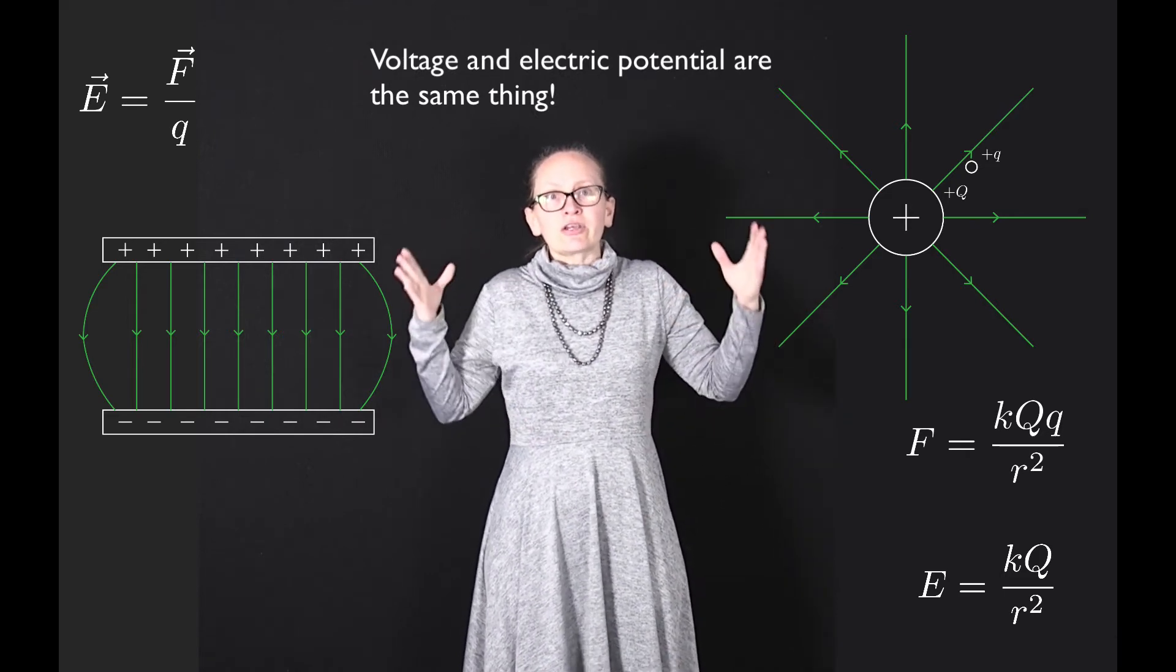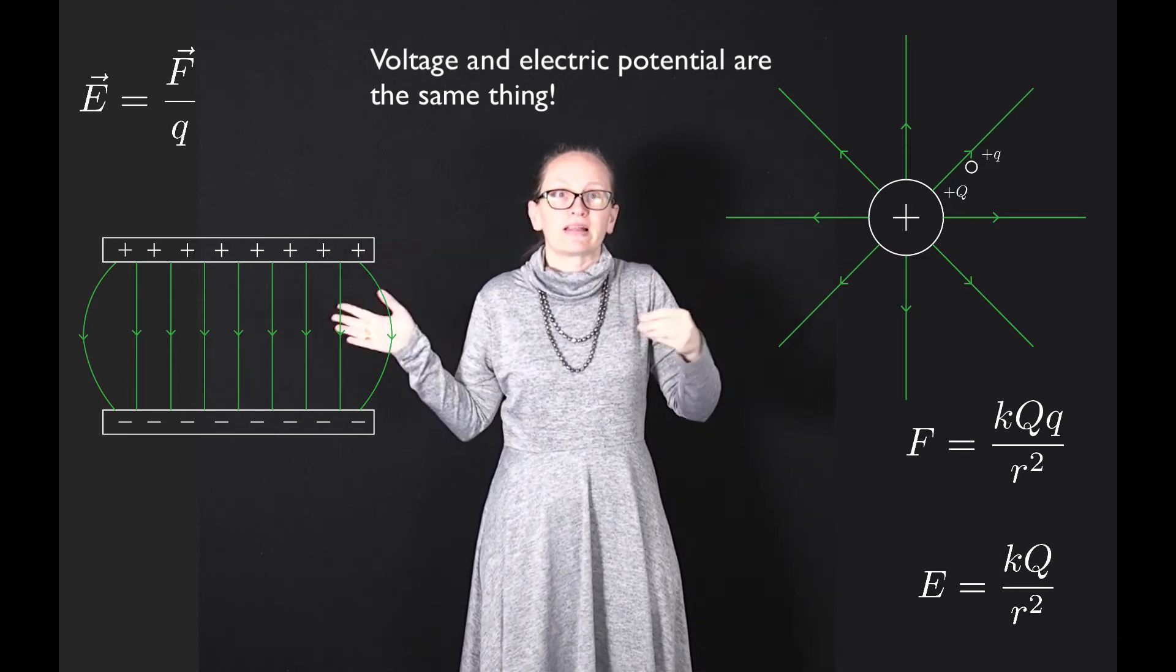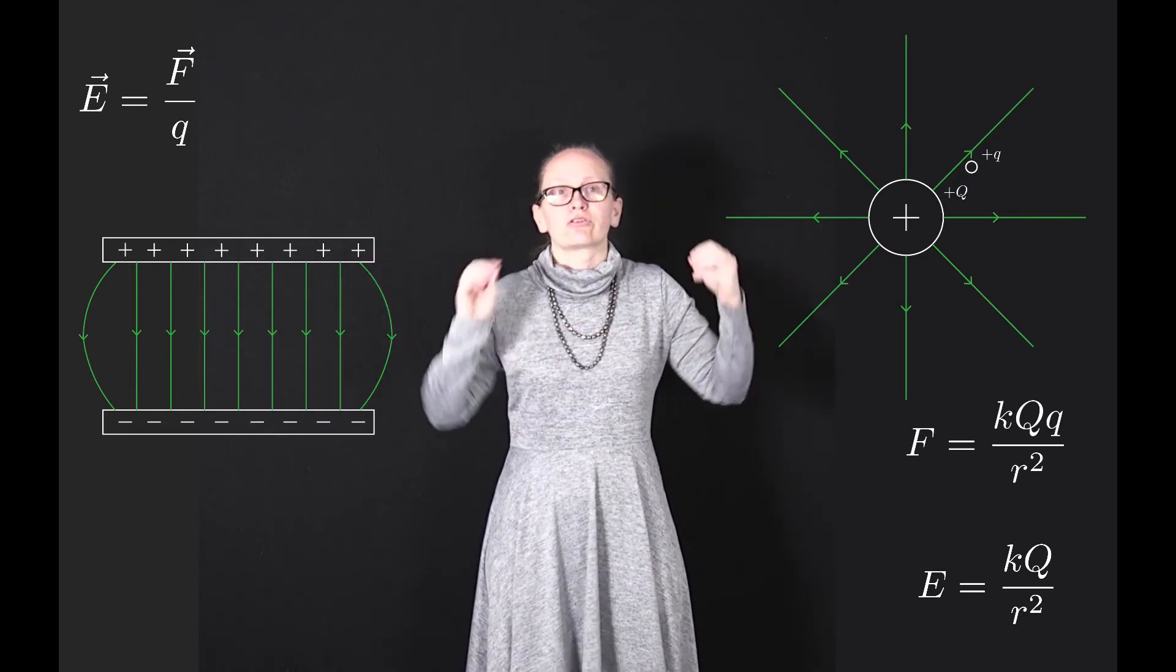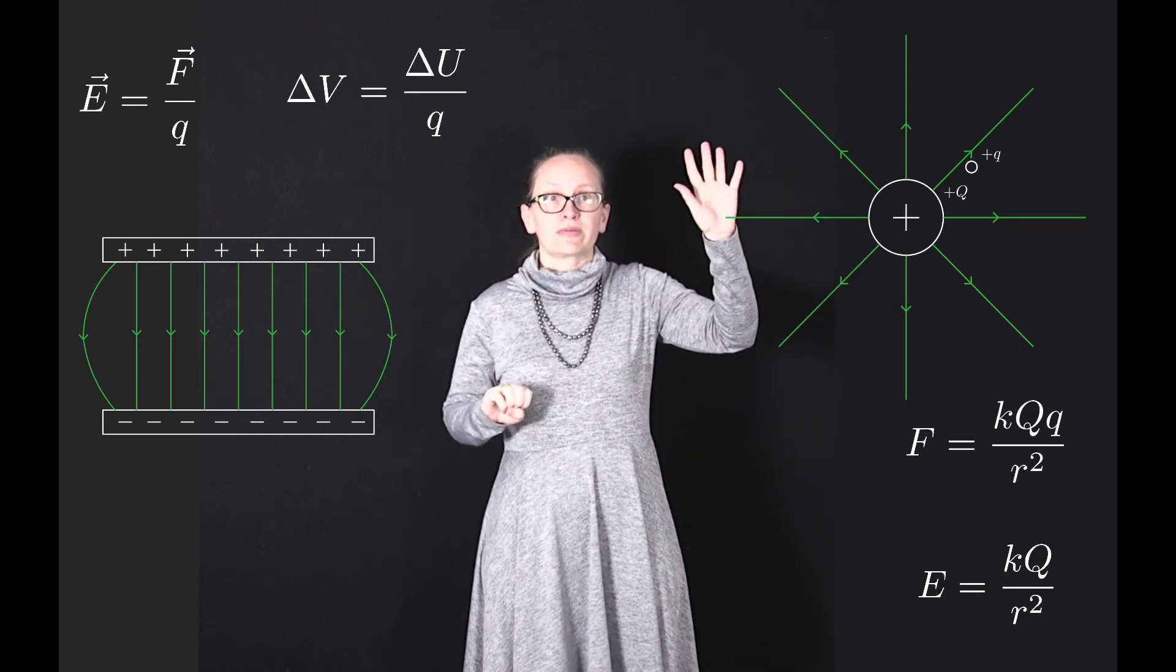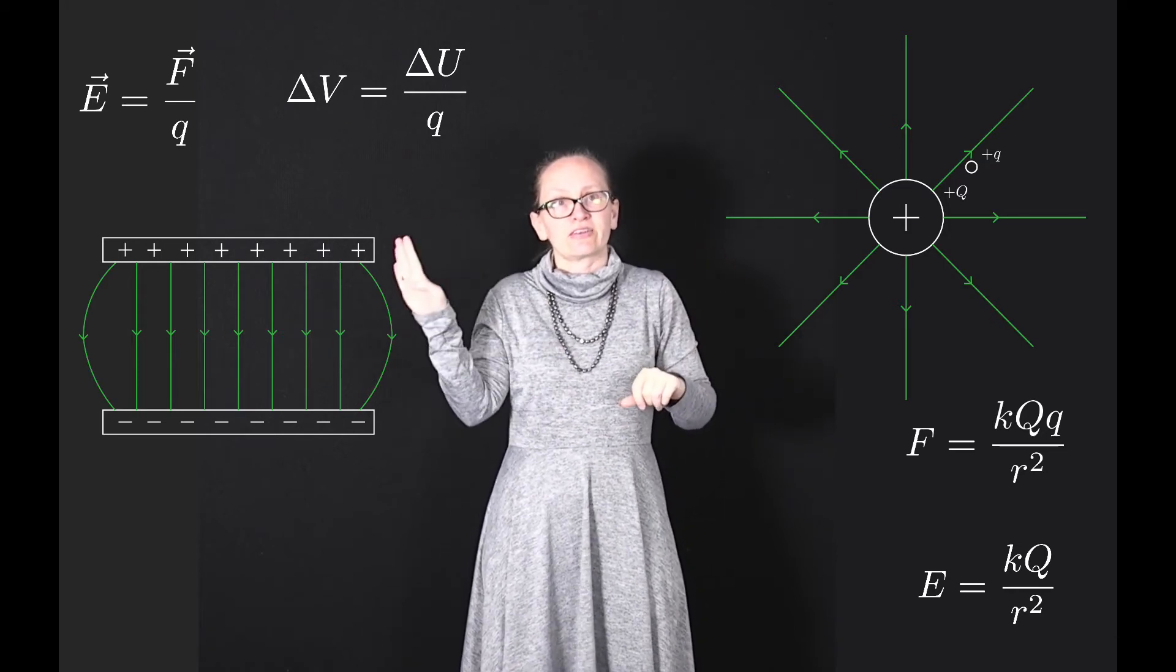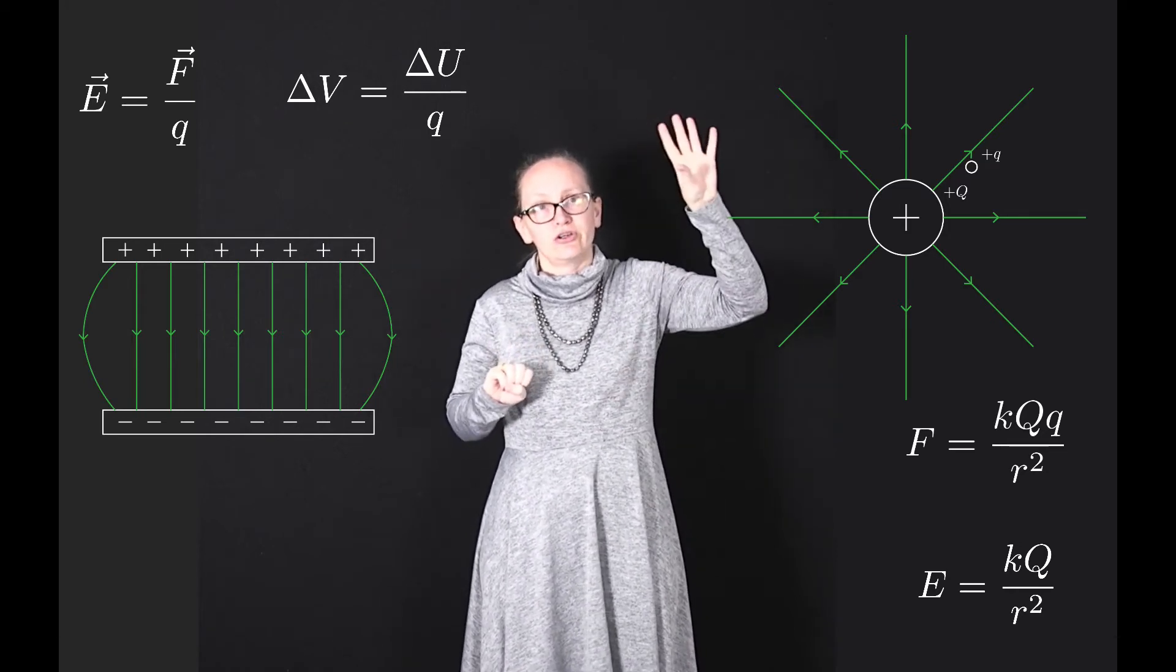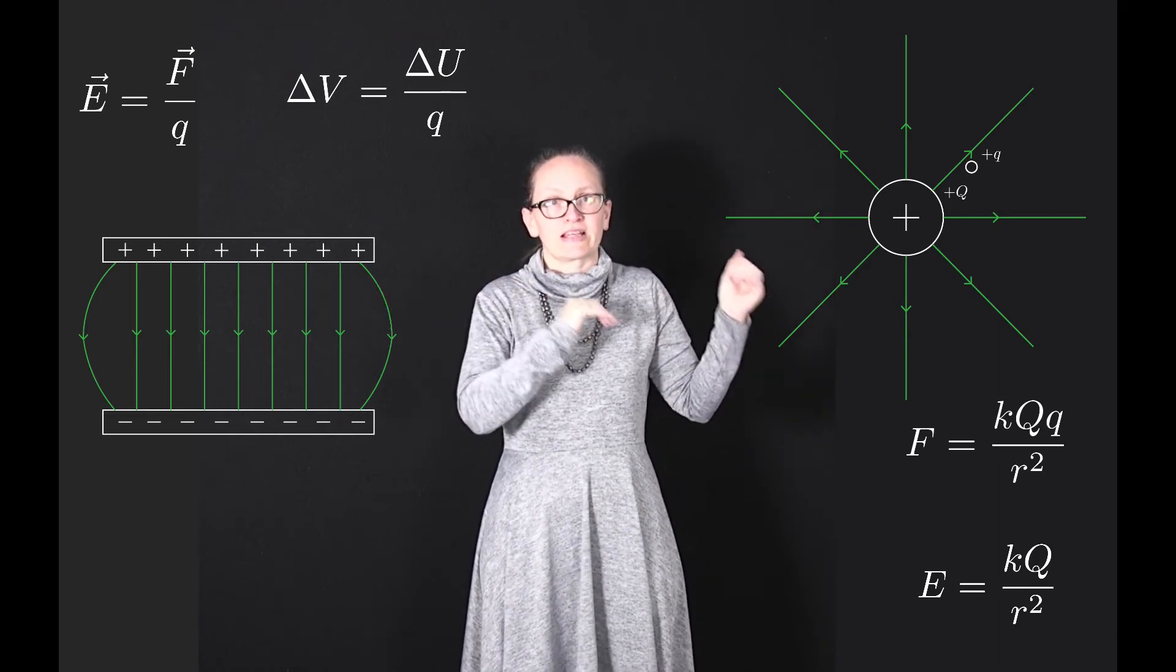The electric potential is actually related to the electric potential energy through the equation. The change in potential is equal to the change in potential energy divided by q. So we can write this as delta V equals delta U divided by q. In this case the delta represents a change,